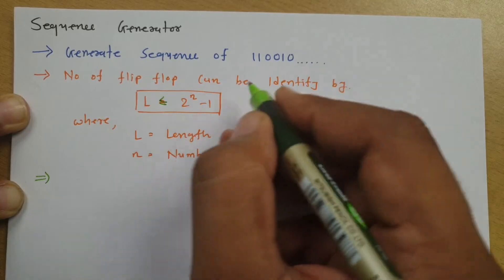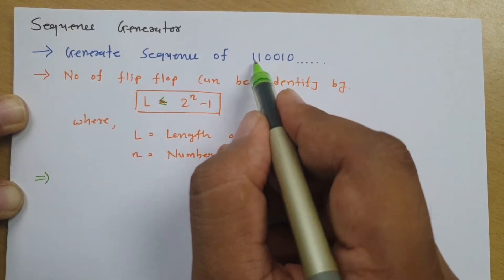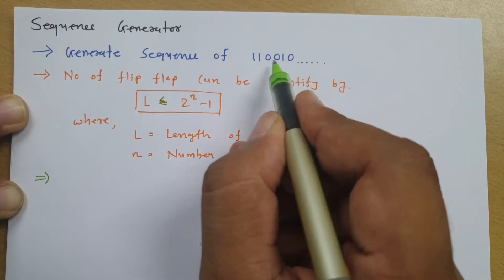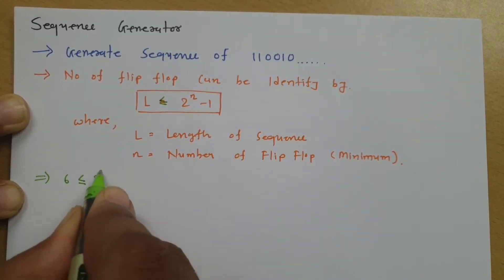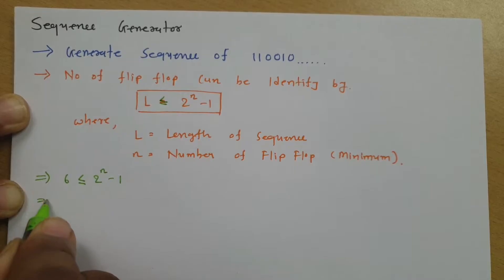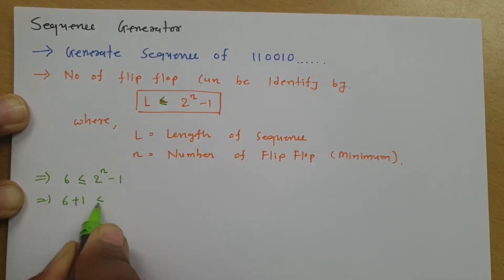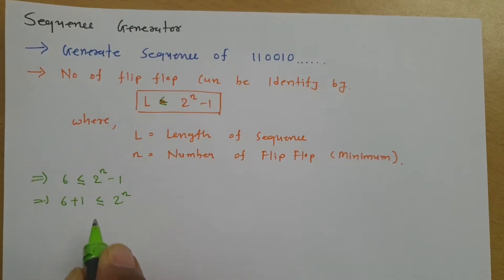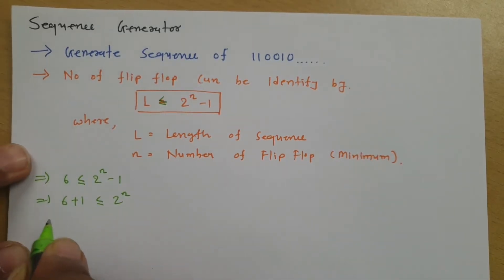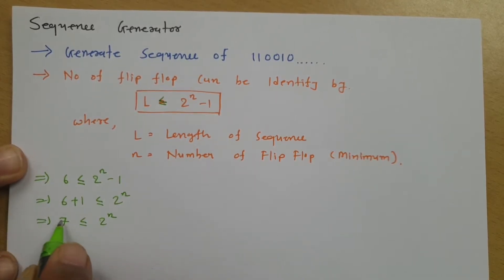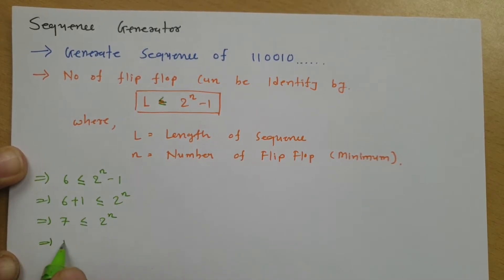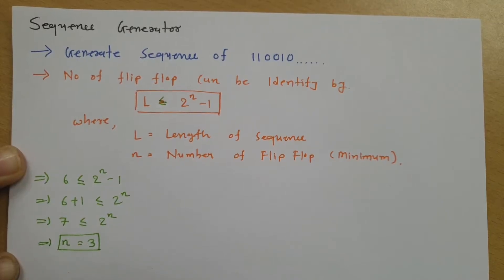So if you place the data here, we have the sequence 110010, so total 6 bits. So l = 6 ≤ 2^(n−1). If you move the −1 to the other side, 6 + 1 = 7 should be ≤ 2^n. For 7 ≤ 2^n, we need n = 3. So the minimum number of flip-flops required is 3.